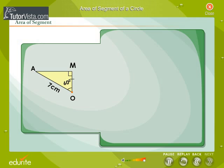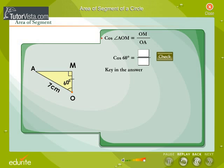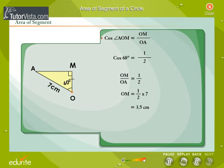Recall your knowledge of trigonometric ratios. In right angle triangle OMA, find cos of angle AOM. Cos 60° = 1/2. So, we get OM by OA is equal to 1 by 2, and OM is equal to half of 7, that is equal to 3.5 cm.